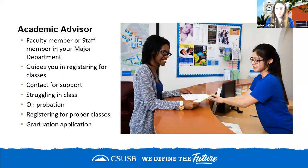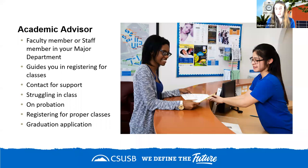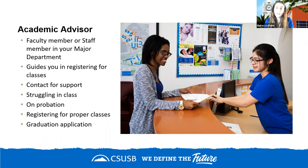An academic advisor's purpose is to guide students through registration, scheduling of classes, and mapping out their degree plan for four years. They are a point person for questions about course sequencing, when courses are offered, and what courses are required to finish a degree. Typically, students meet one-on-one with their advisor once a semester to select courses.